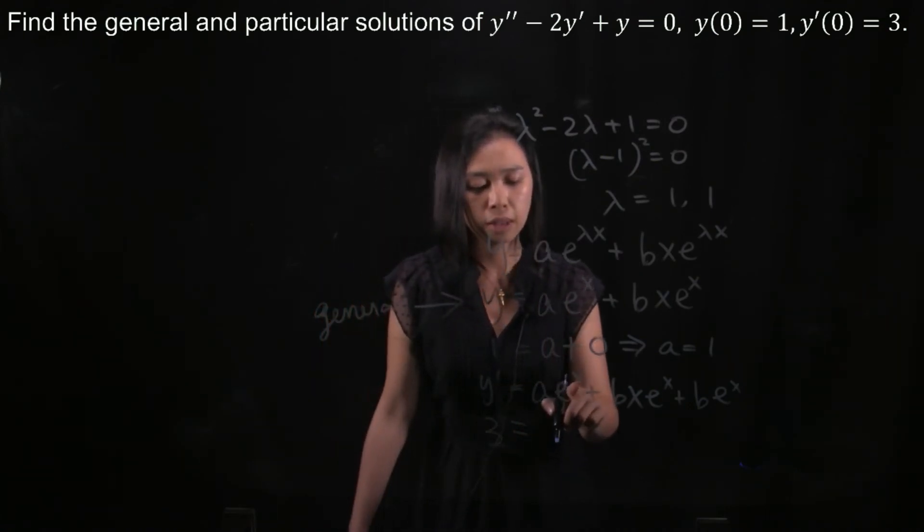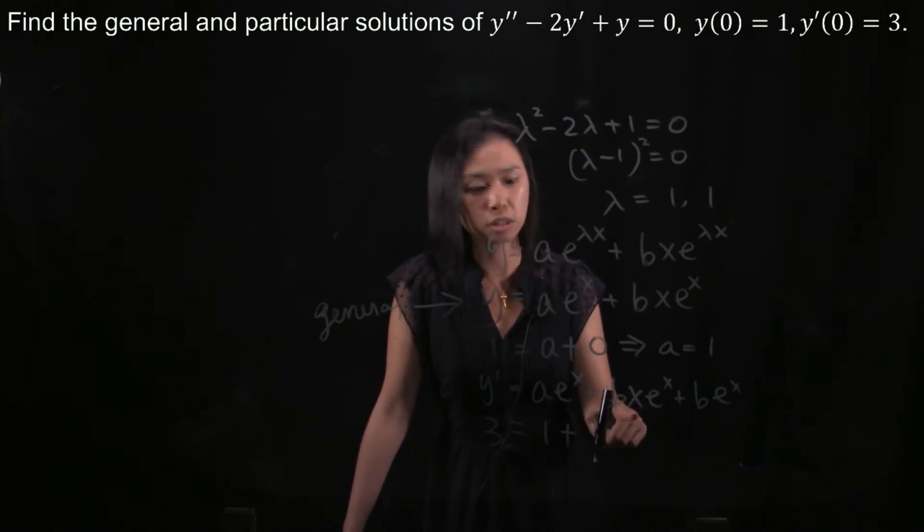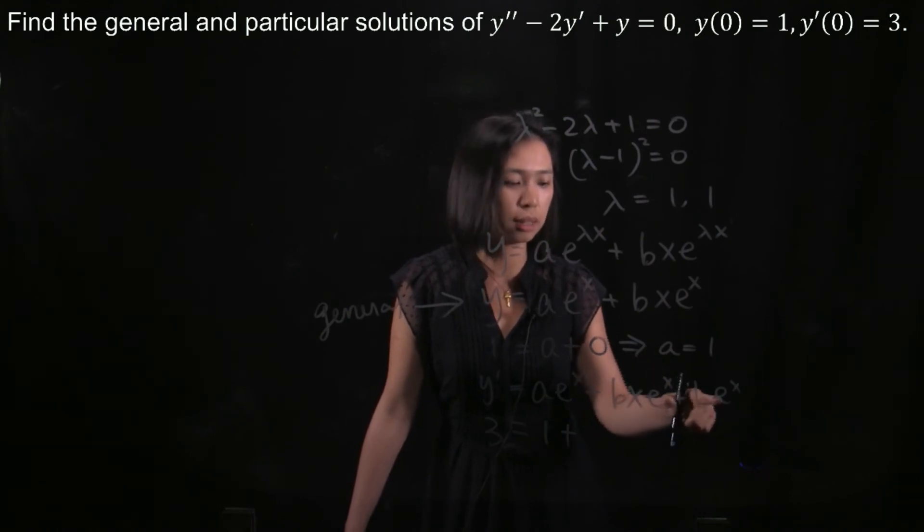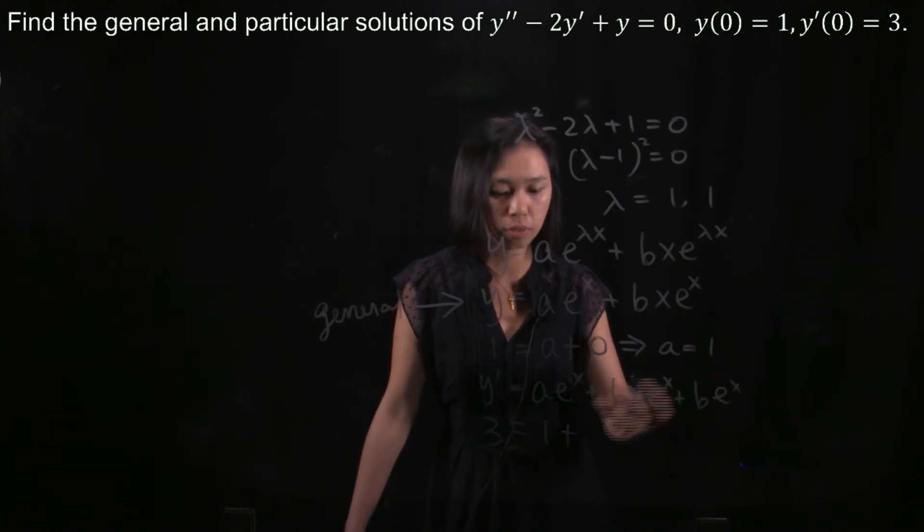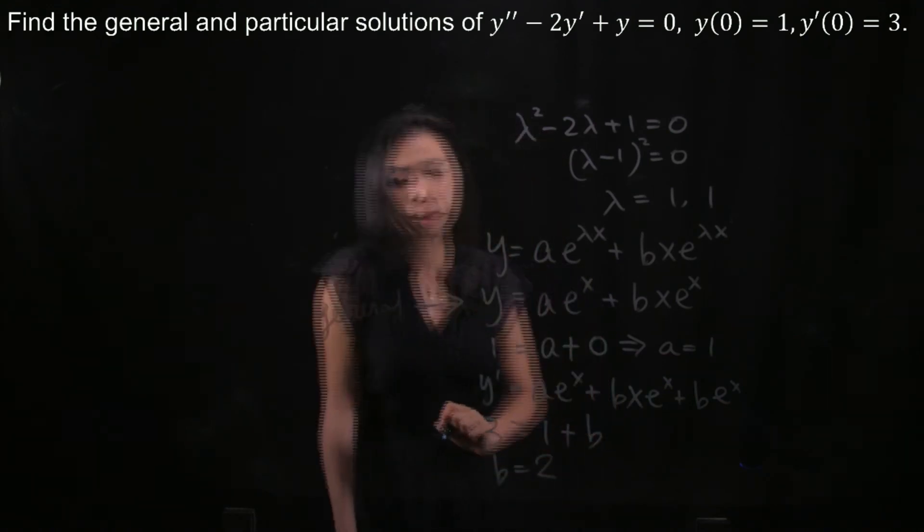So I do the same thing again. e to the power of 0, you get 1. So a is also 1, so 1 times 1 is 1. Plus x is 0, the whole term will vanish. And then you substitute x to be 0, and e to the power of 0, you get 1, so b. So b is actually 2.